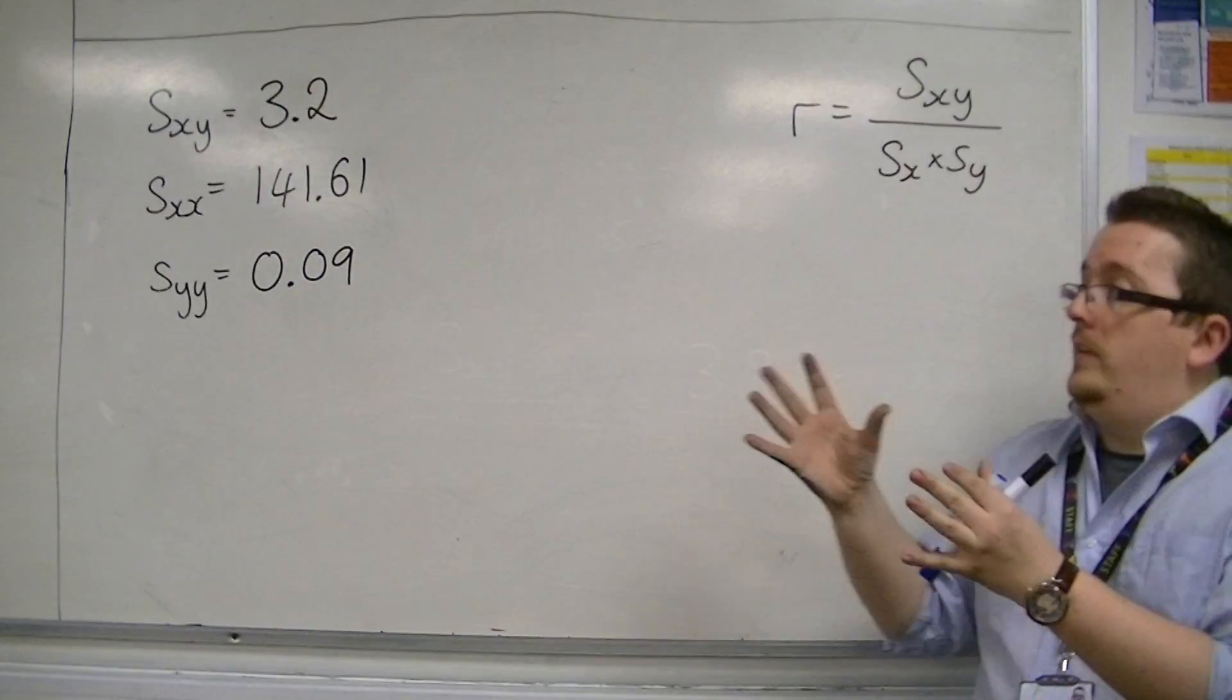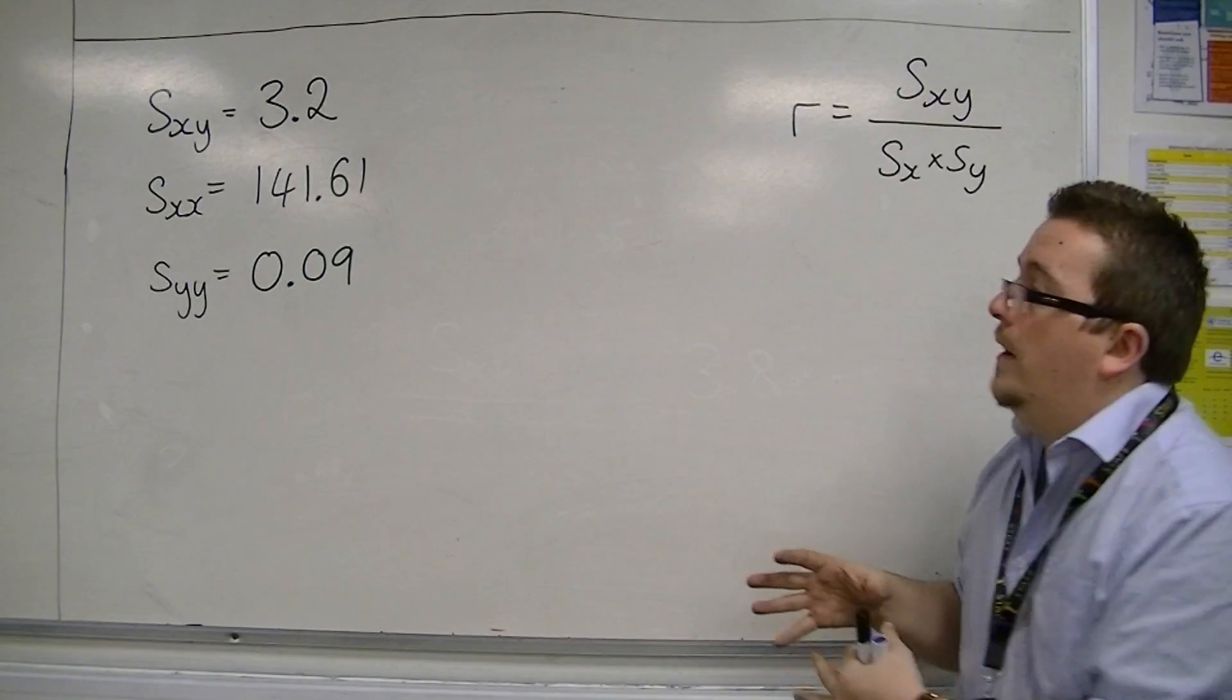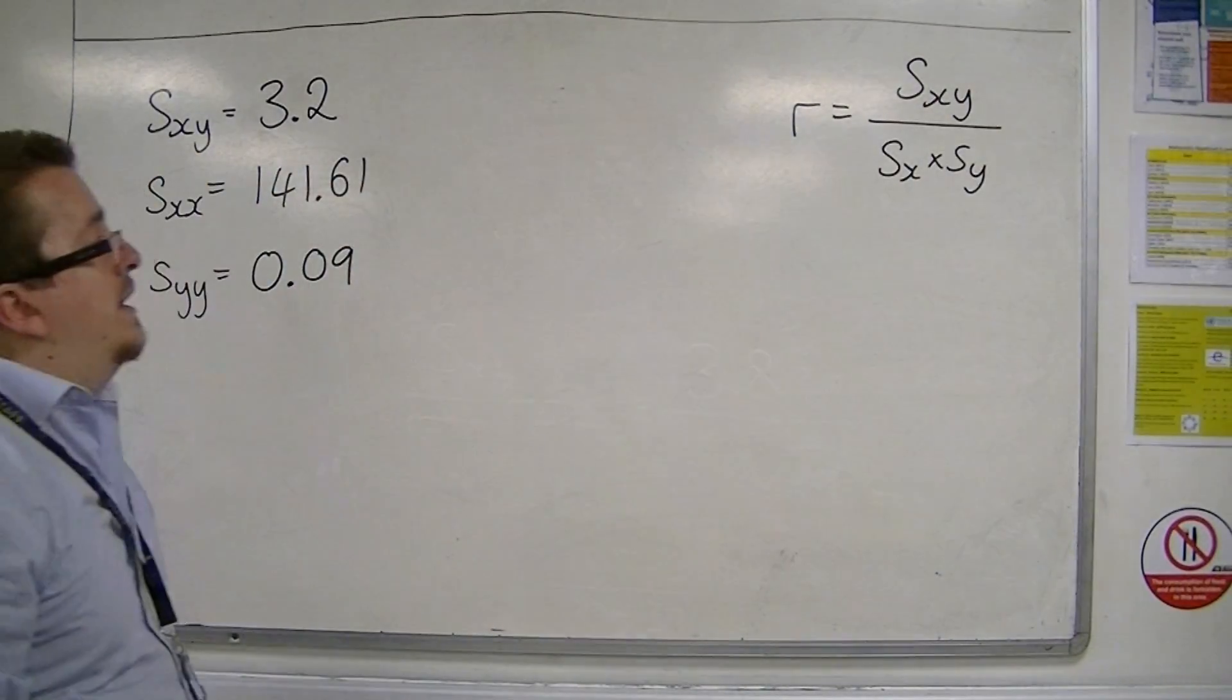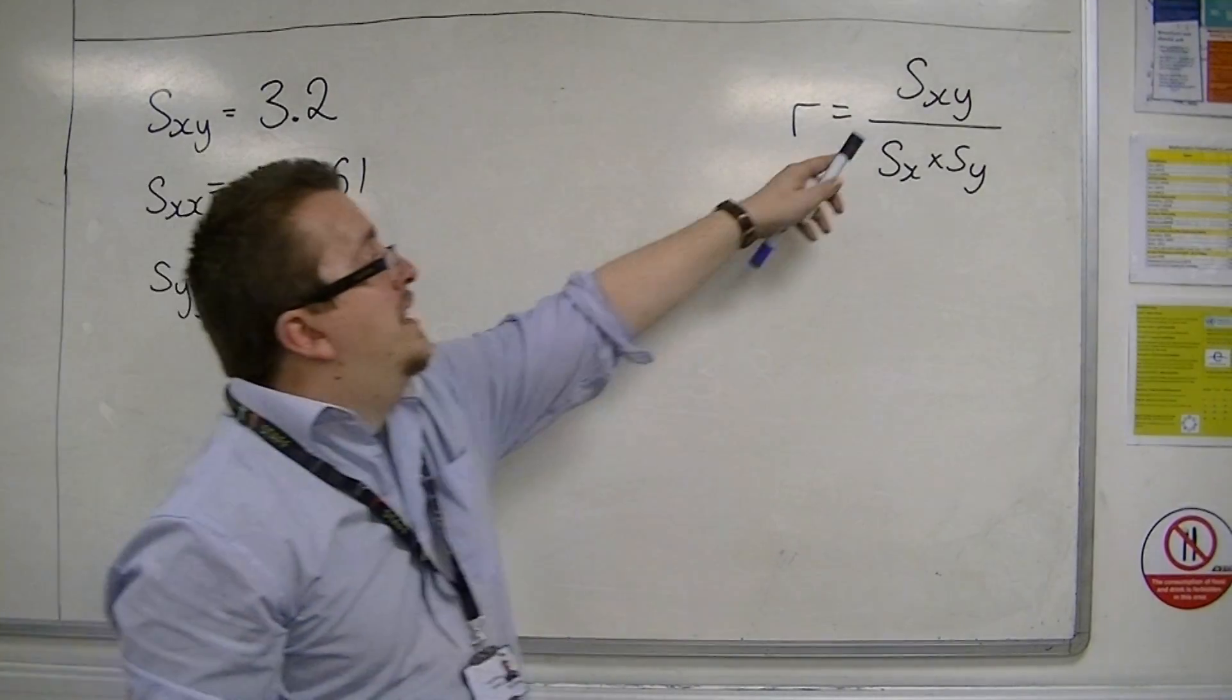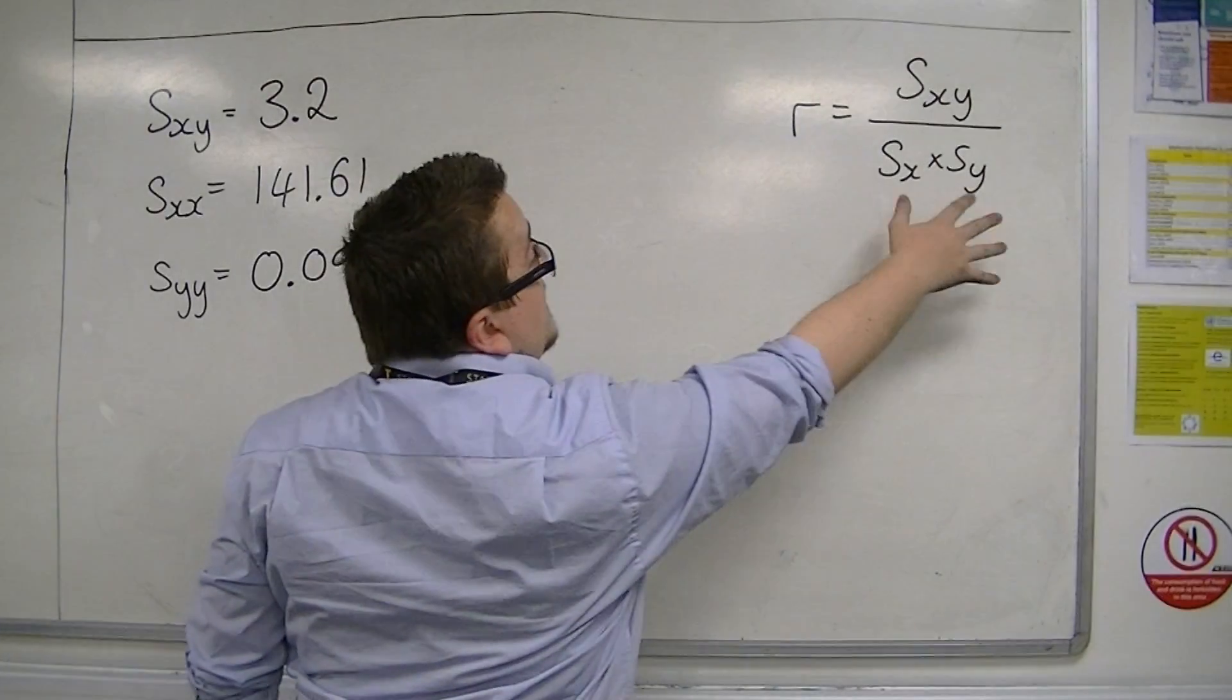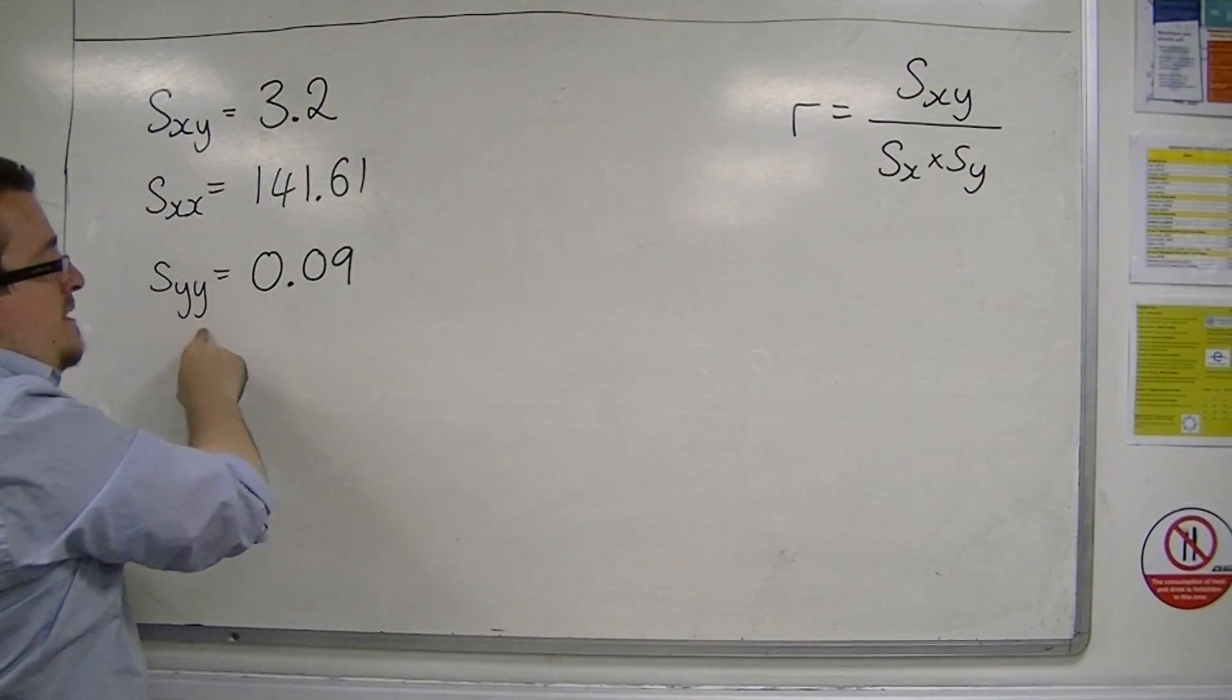But at this point, you should be asking, well, what is Sxx and Syy? Because previously, this was the formula that we were working with. R equals Sxy, well, that appears to be the same thing, the covariance. But then we have Sx and Sy, not Sxx and Syy.